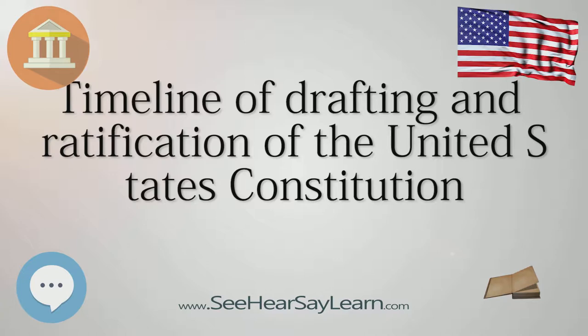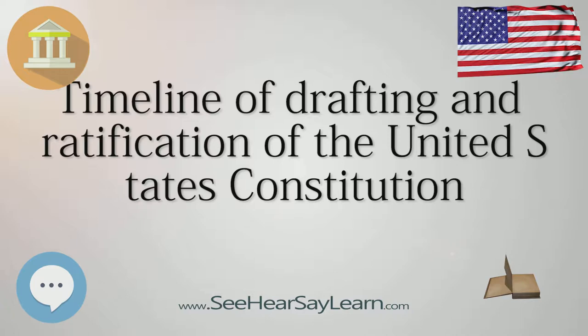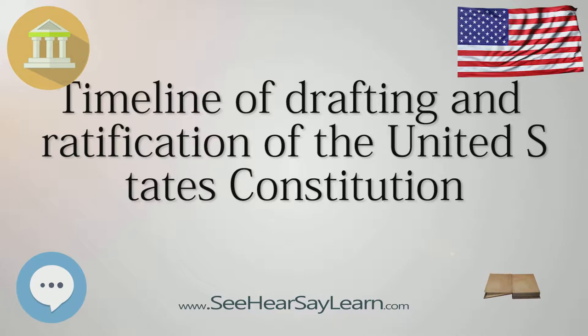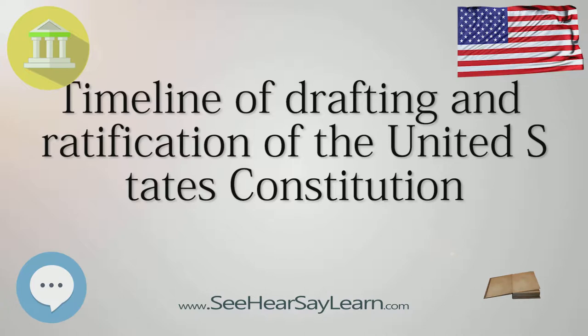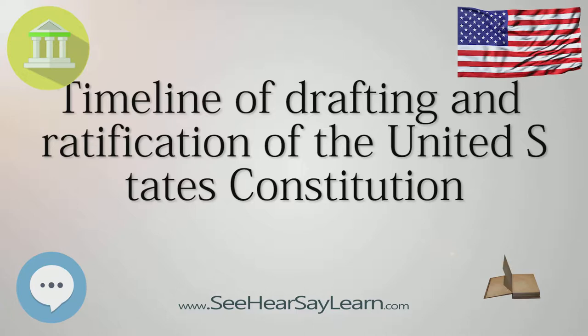February 21: Convention to Discuss Revisions to the Articles of Confederation Called. The Congress of the Confederation calls a constitutional convention for the sole and express purpose of revising the Articles of Confederation and reporting to Congress and the several legislatures such alterations and provisions therein as would render the federal constitution adequate to the exigencies of government and the preservation of the Union.